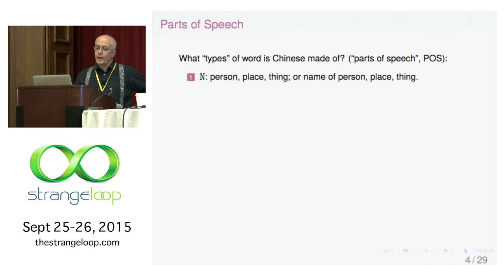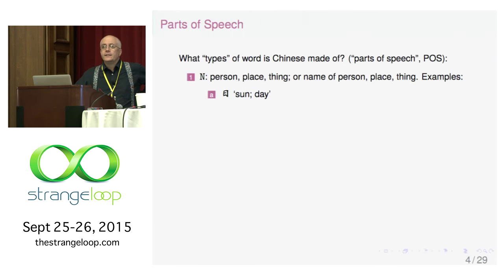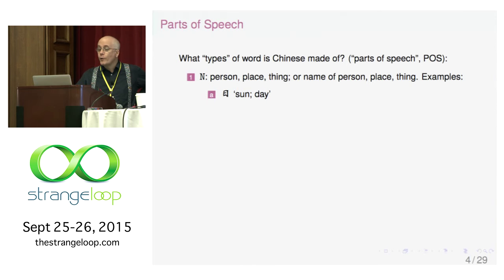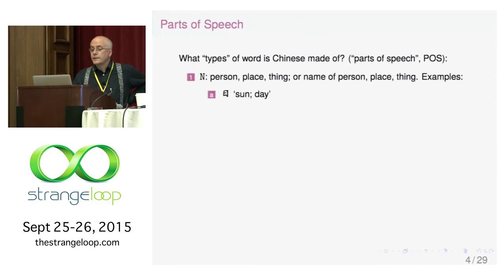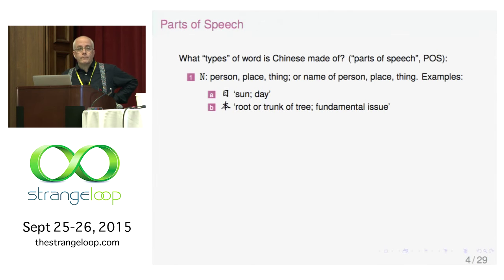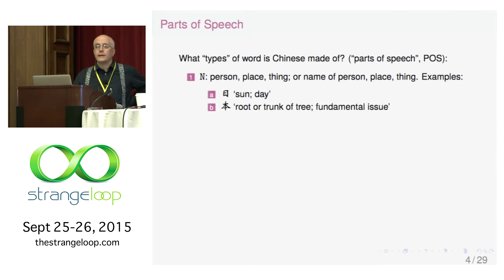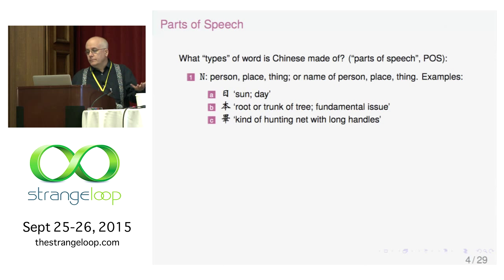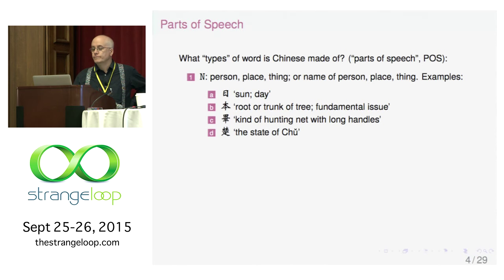A noun is a person, place, or thing. In Chinese, for example, the sun — it also means day — is written with a certain character. The root or trunk of a tree can also mean a fundamental issue. Bi is a kind of hunting net with long handles used in antiquity. And here's the state of Chu, which is in southern China around the Wuhan area. These are nouns. A verb can be an action, as you would expect, or it can be a state. We associate states in English with adjectives, but in classical Chinese there's a good case to be made that there's no difference between what we consider an adjective and a verb — they're all verbs.